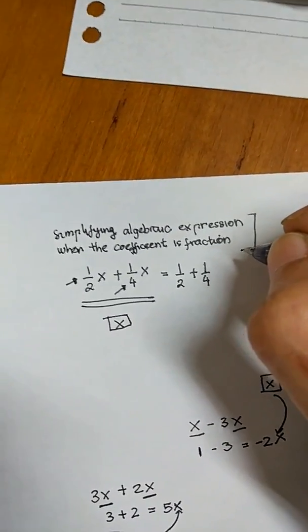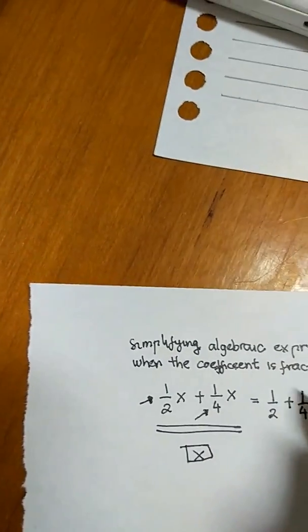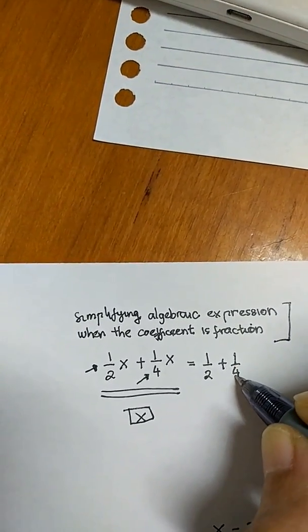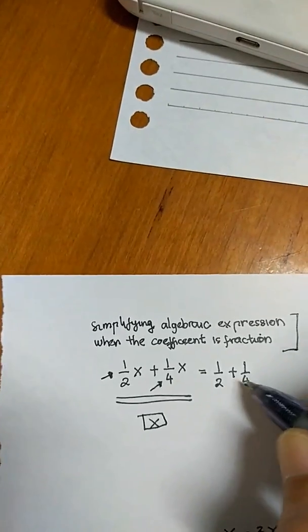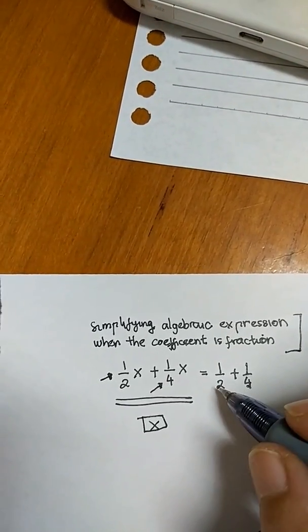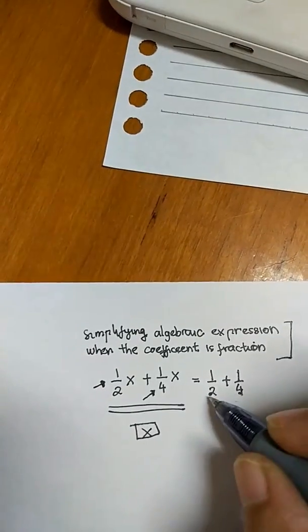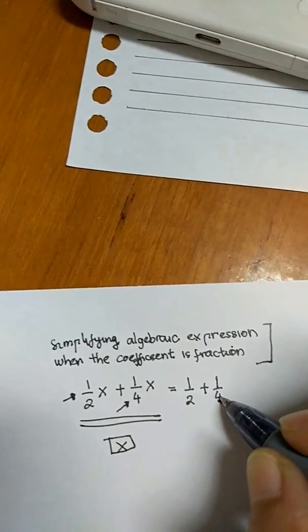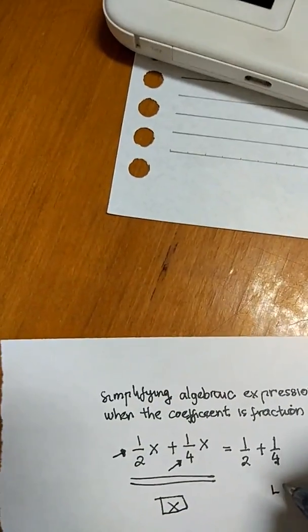Before you can add the numerators, you need to make sure the denominators are the same. Right now the denominators are not the same — one half has denominator 2, one quarter has denominator 4. You need to find the LCM of the denominators — the smallest number that can be divided by both 2 and 4. The LCM of 2 and 4 is 4.